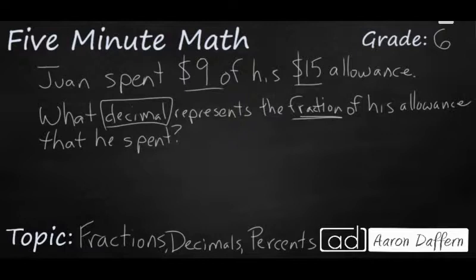So a fraction needs to have a numerator and a denominator. So the numerator is going to represent how much money he spent, $9, out of how much money did he get in his allowance? 15. So he spent 9 15ths of his allowance.